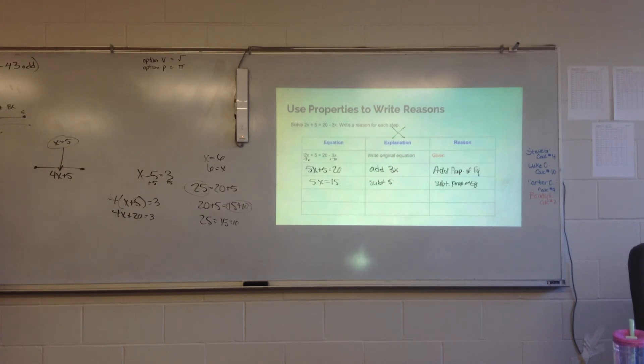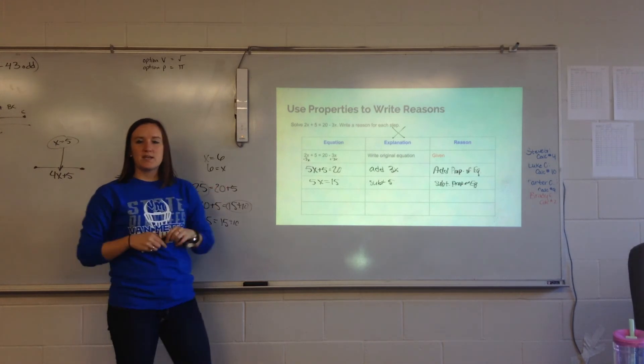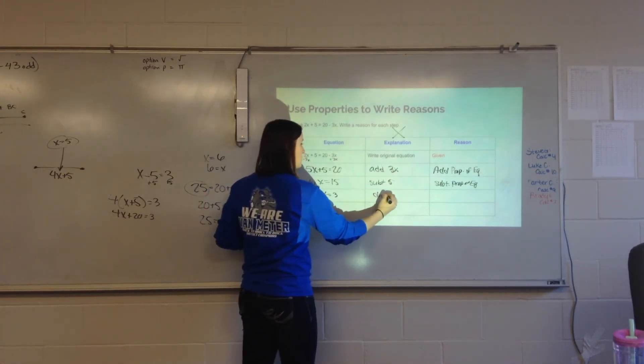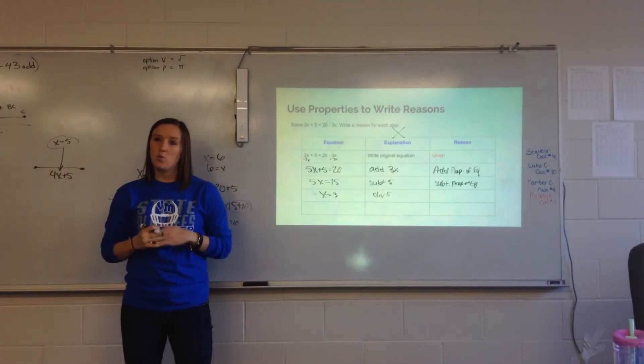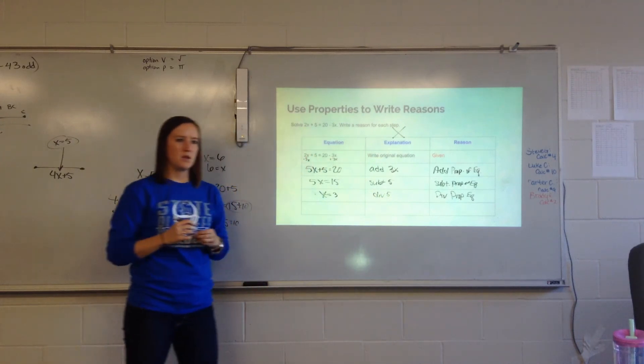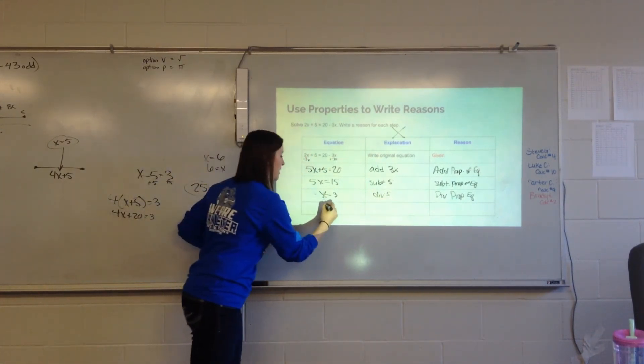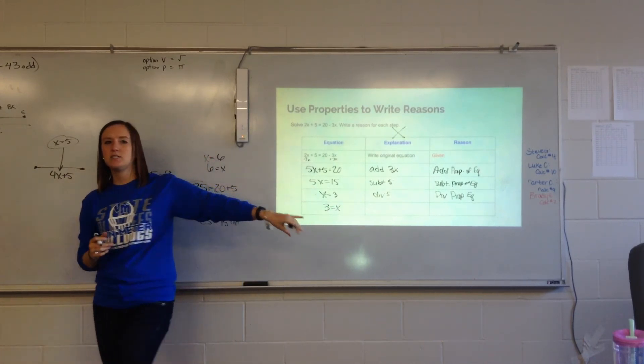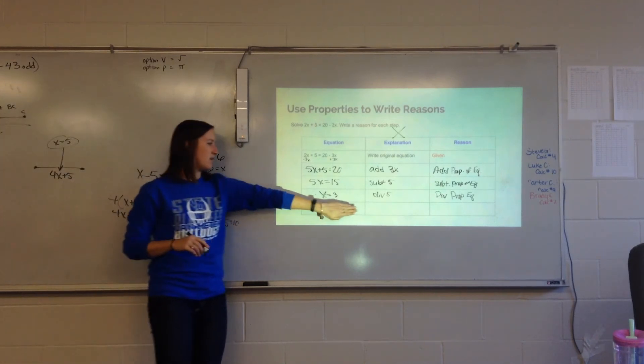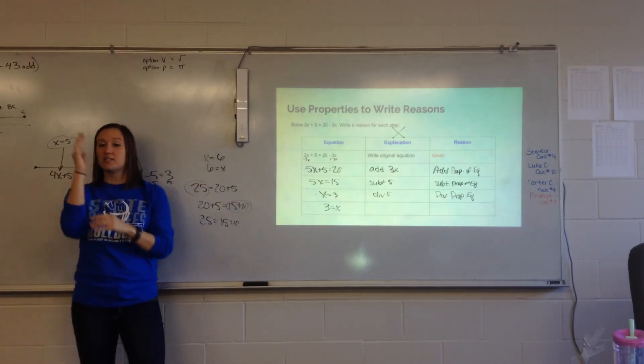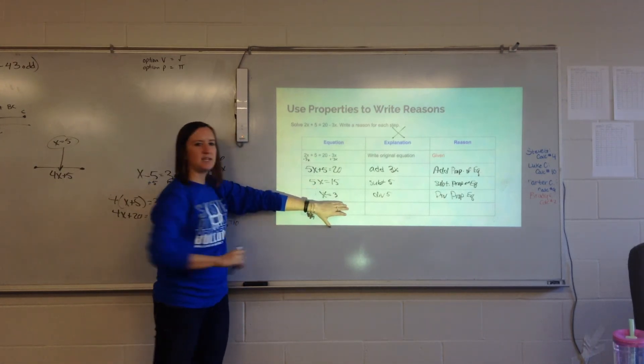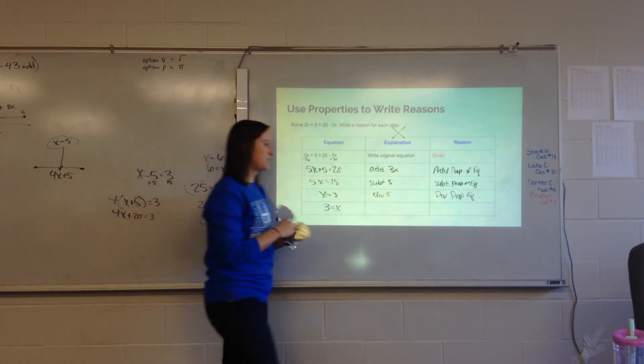What's the next step we do when we solve equations? Divide by 5. We're dividing by 5. So, if I can divide on both sides, which property is that? Division property of equality. Now, we're done, we're finished. What if I gave you this? If I went from x equals 3 to 3 equals x? Which? Careful. Reflexive tells me that? Symmetric. Yes. Symmetric. Because, reflexive tells me what? That number has to equal that same number. Is 3 and x the exact same thing? No. So, this is the symmetric property.